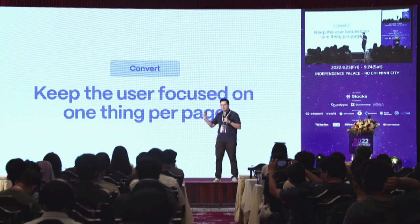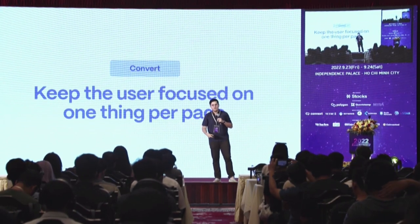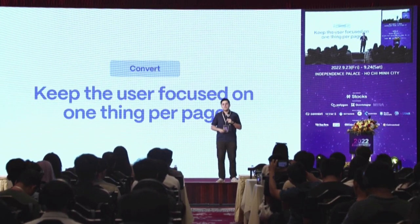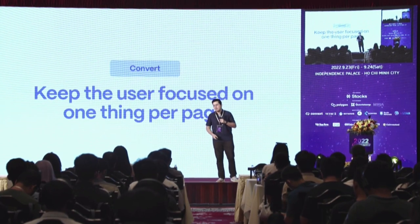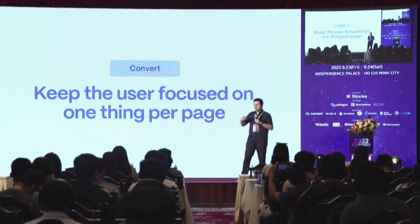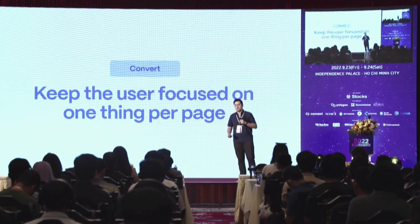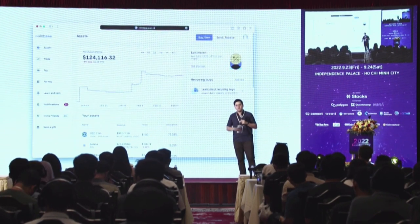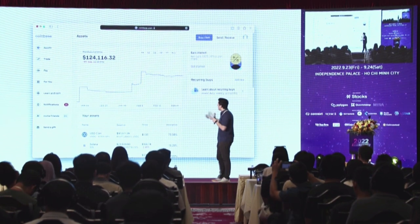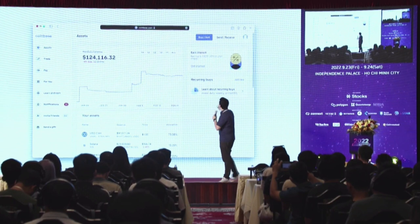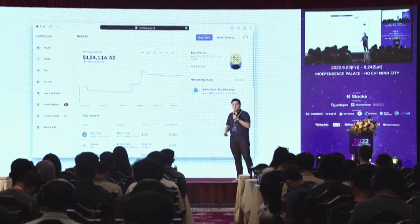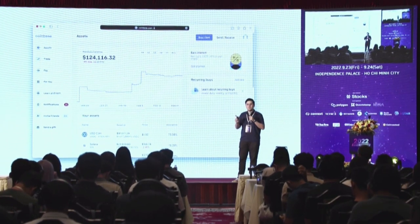Now I want to get to conversion. Let's say we've gotten users really excited and they're trying our application — now we need to make sure that when they get to the home screen, they understand how to continue successfully. The best way to do that is to always keep the user focused on one thing per page. A great example is Coinbase: there's a lot of information to convey — portfolio balance, assets, navigation to earn interest, recurring buys — but there's only one thing on the page they're actually drawing attention to.